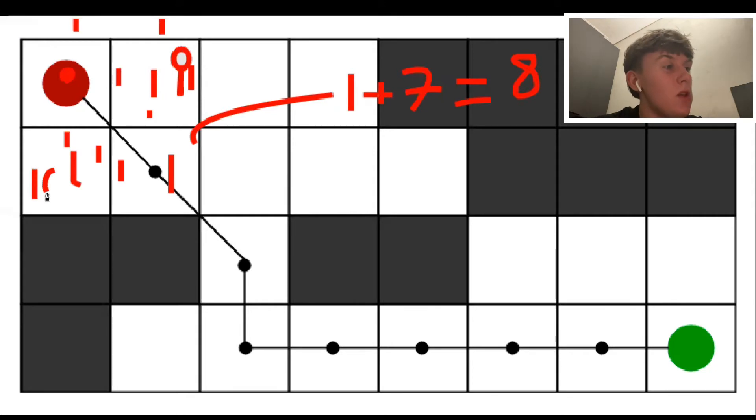Therefore, because eight is the lowest score, it will be the next node the algorithm picks because it's picking the lowest score overall for each node.